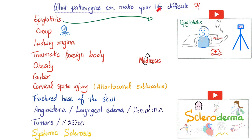Genetic diseases that make your life difficult include Down syndrome, Turner syndrome, and others. Additional conditions: epiglottitis, croup, Ludwig angina, traumatic foreign body, obesity, goiter, any mass, cervical spine injury such as atlanto-axial subluxation — which happens in rheumatoid arthritis — fractured base of the skull, angioedema, laryngeal edema, hematoma, tumors, masses, systemic sclerosis, etc.